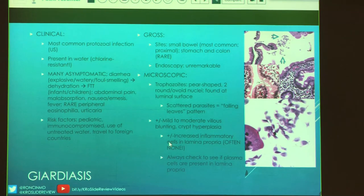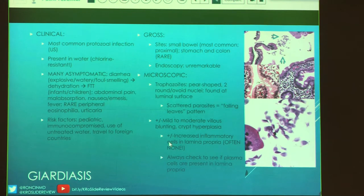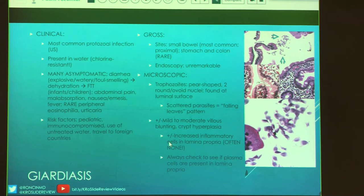Giardia is the most common protozoal infection in the U.S., transmitted by water, and it is chlorine resistant. Most people are asymptomatic. If they have diarrhea, it's going to be explosive, watery, and foul-smelling — not frothy like steatorrhea, just watery. Because of the diarrhea, think about dehydration, malabsorption, failure to thrive, abdominal pain, nausea, vomiting, and fever. Very rarely, if severe, they could have eosinophilia or urticaria. Risk factors include being young, immunocompromised, using untreated water, or traveling to foreign countries.